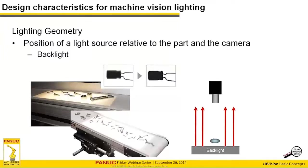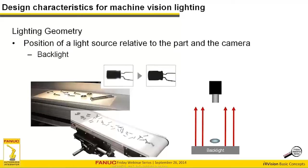Backlighting is common in traditional machine vision but challenging in robotic guidance — parts are on conveyors, cameras are high in the air, and backlights can't always be small. However, backlighting your conveyor is not that hard. You can buy commercial conveyors with backlights incorporated. This is a technology that a lot of people don't consider but is actually very viable and useful.